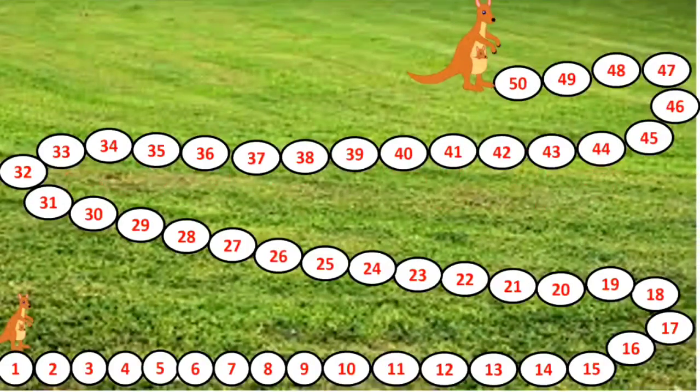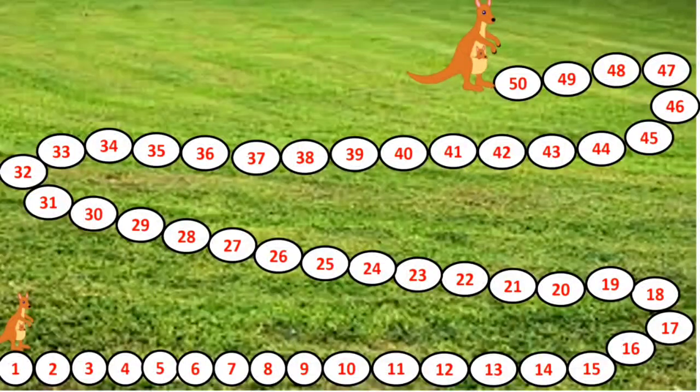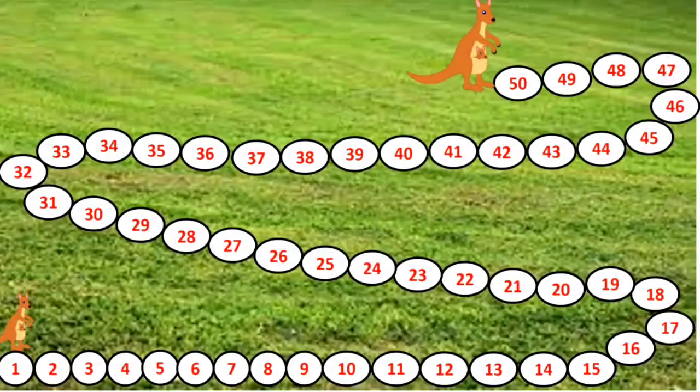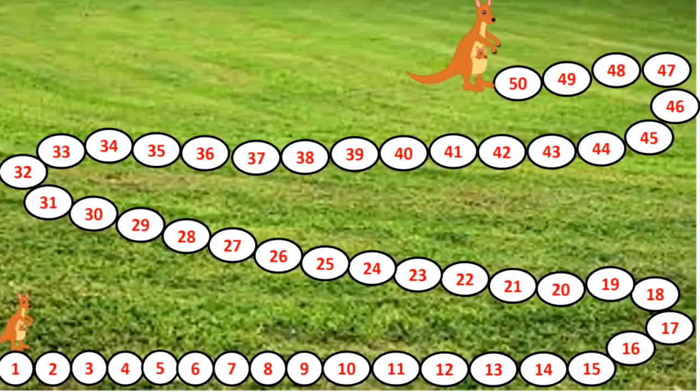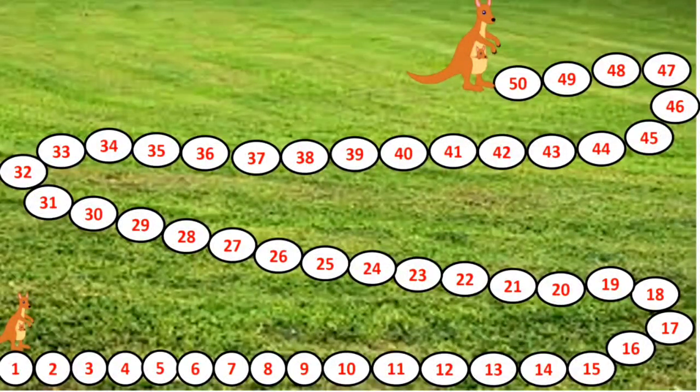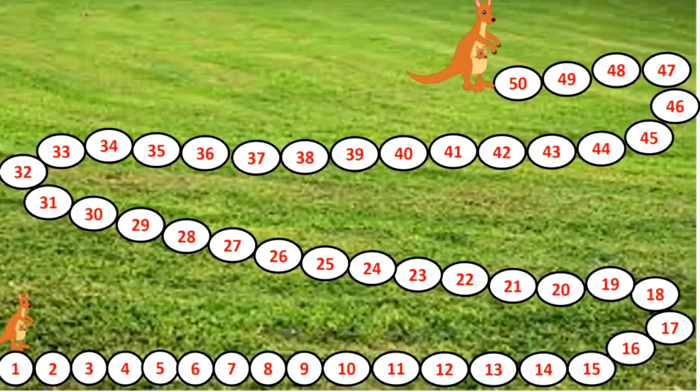On the screen you can see two kangaroos. One is at number 1, another waiting for his friend at number 50. Now this number 1 kangaroo finds this way too long.